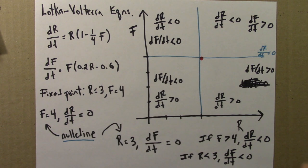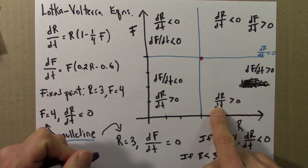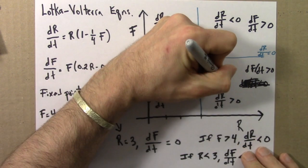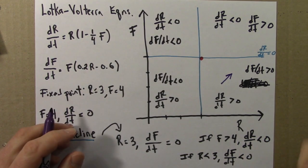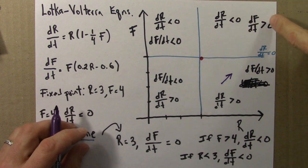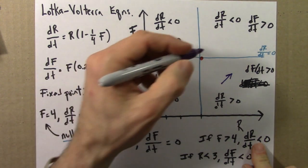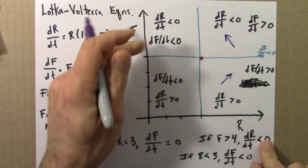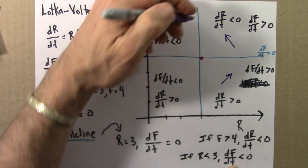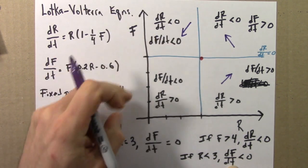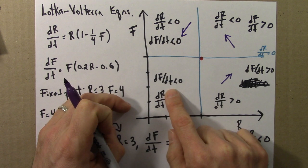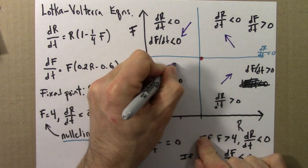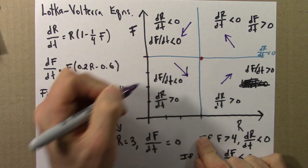Alright, so, if I'm over here, r is increasing, f is increasing. That means motion is going to be in this direction, in the direction of increasing r and increasing f. If I'm over here, the rabbits are decreasing, but the foxes are still increasing. So, fox increase, that's up, rabbit decreases to the left, so I'll move like this. Here, both rabbits and foxes are decreasing. And here, foxes are decreasing, rabbits are increasing. Rabbits increasing means I'm moving to the right. Foxes decreasing means I'm moving down.